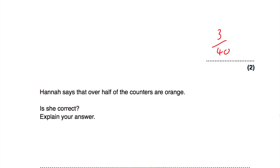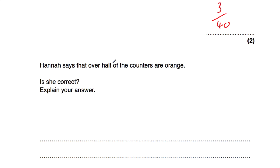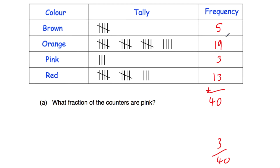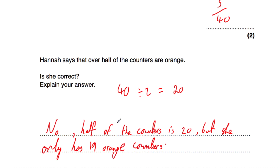Part B. Hannah says that over half of the counters are orange. Is she correct? There are 40 counters altogether. 40 divided by 2 is 20, so half of the counters would be 20. We need more than 20 to be over half. But there are only 19 orange counters — that's actually less than half. So the answer is no: half of the counters is 20, but she only has 19 orange counters.